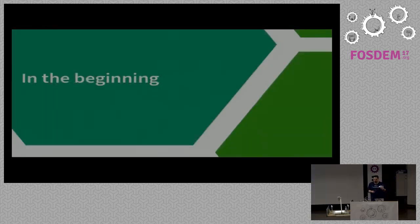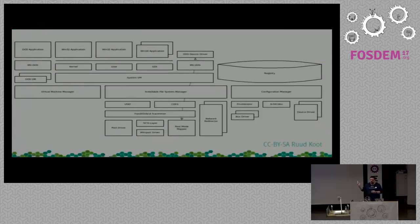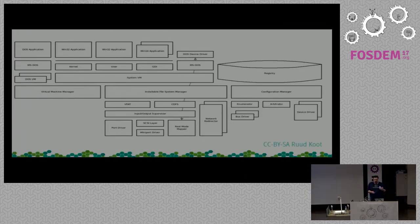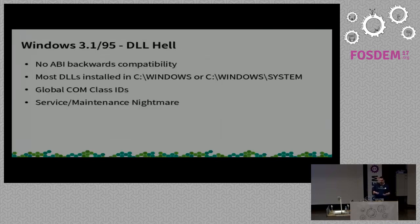Starting at the very beginning — I never thought I'd be presenting at FOSDEM and having an opening slide of a Windows 95 architecture diagram. But this is the place to start. Back in Windows 95 and Windows 3.1, the traditional dependency problem is best exemplified by DLL hell.